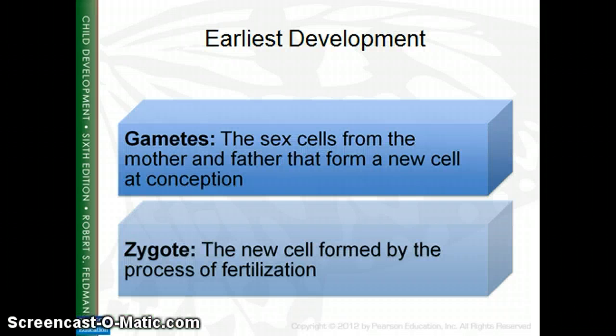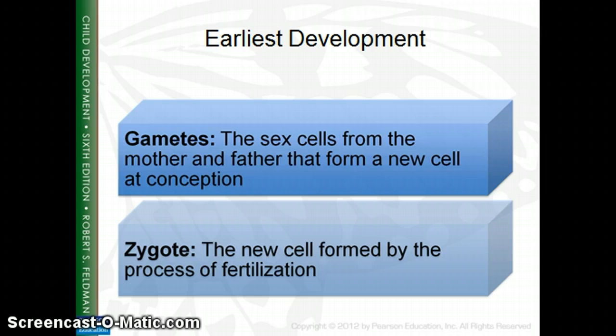Humans begin life as a single cell, created when a male reproductive cell — a sperm — pushes through the membrane of the ovum, or the egg, the female reproductive cell. About an hour or so after the sperm enters the egg, the two gametes fuse and become one single cell, a zygote.